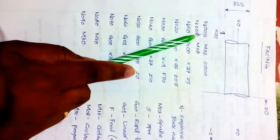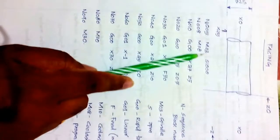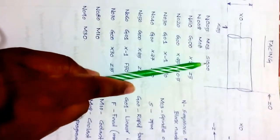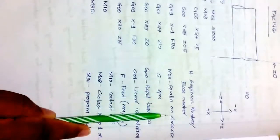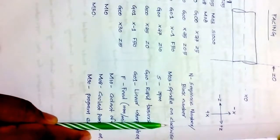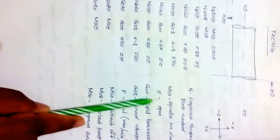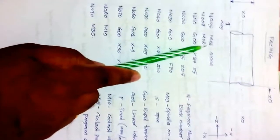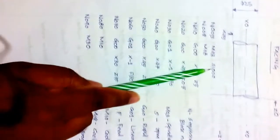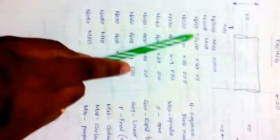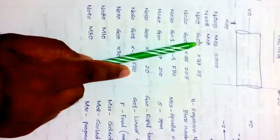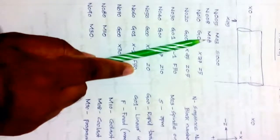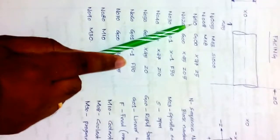The first block contains N005 and M03 S1000. M03 means spindle on, rotating in the clockwise direction, and S1000 means 1000 RPM. So the spindle runs clockwise at 1000 RPM. The next block, N008, contains M08, which means coolant pump number one on.